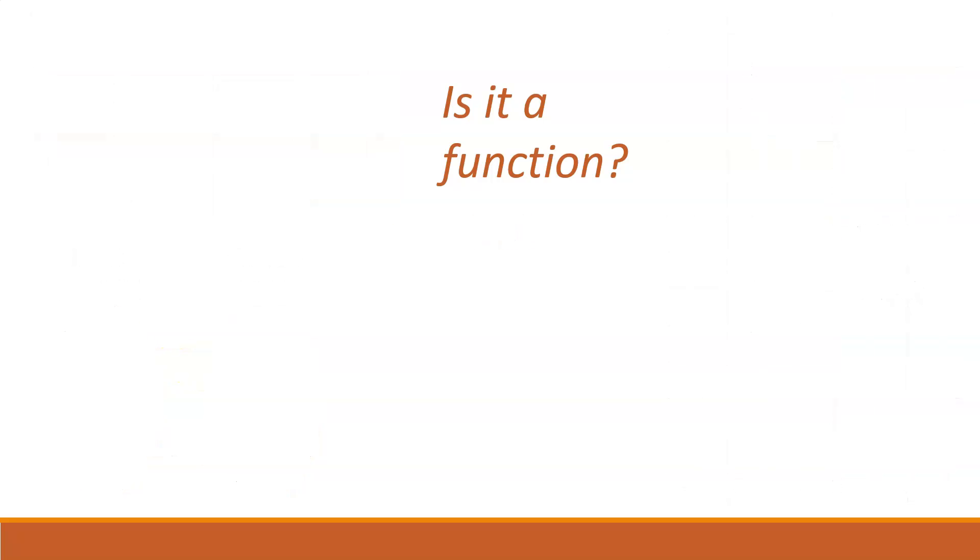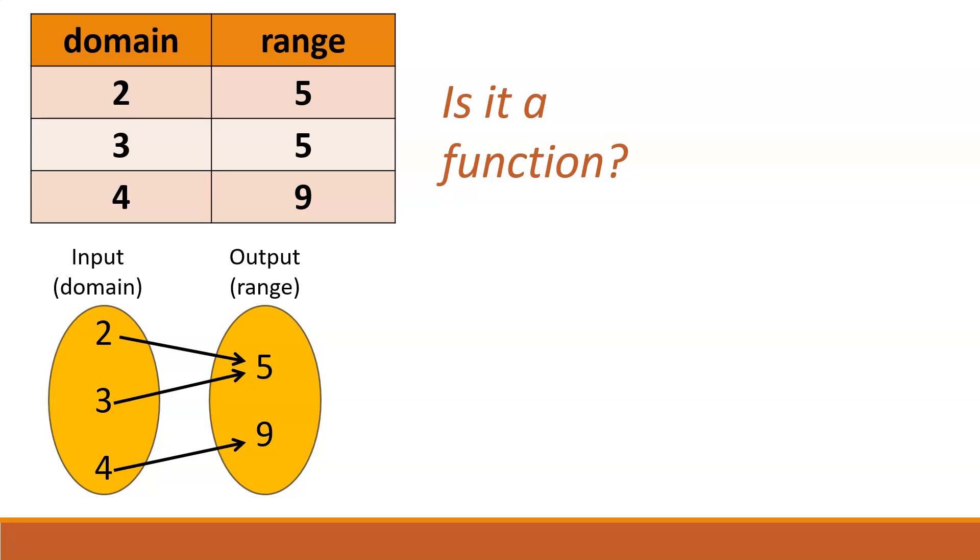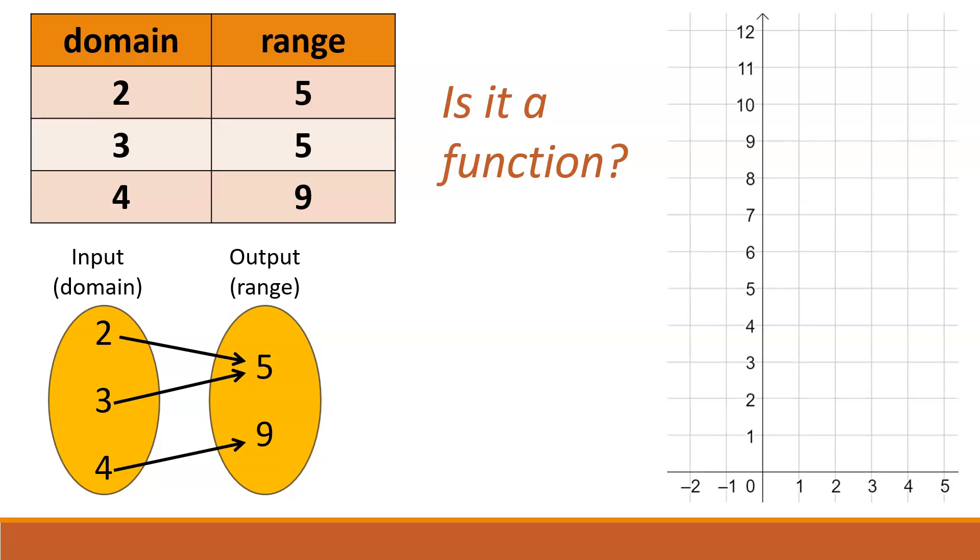Let's try one more relation and answer the same question. Is it a function? Here's a table that represents the three ordered pairs of the relation. Here's a mapping. The domain values are 2, 3, and 4. Range values are 5 and 9. We can see from the table that 2 maps to 5, 3 maps to 5, and 4 maps to 9. And for our graph, we've got three ordered pairs: 2, 5; 3, 5; and 4, 9.